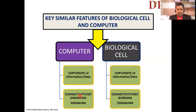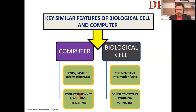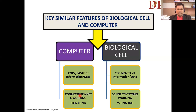In computers we know there is a system of copy and paste of information and data. The biological cell also has its own established mechanism of copy and paste — the most versatile example is genomic content replication, copying the genetic code from one copy to another.